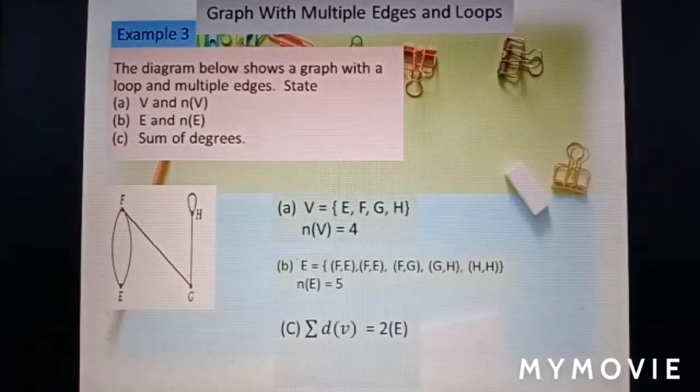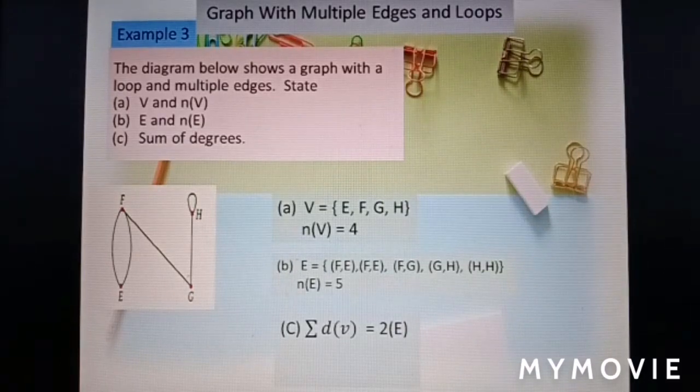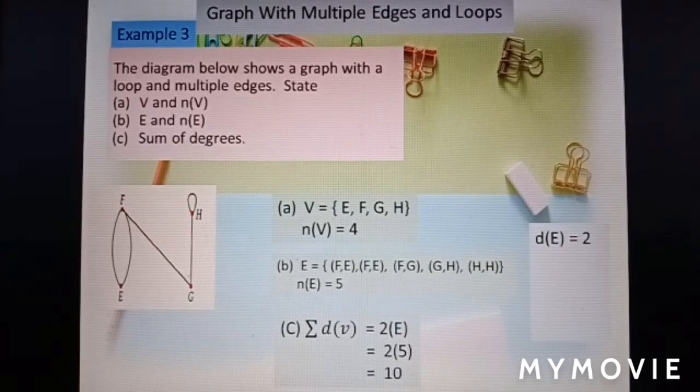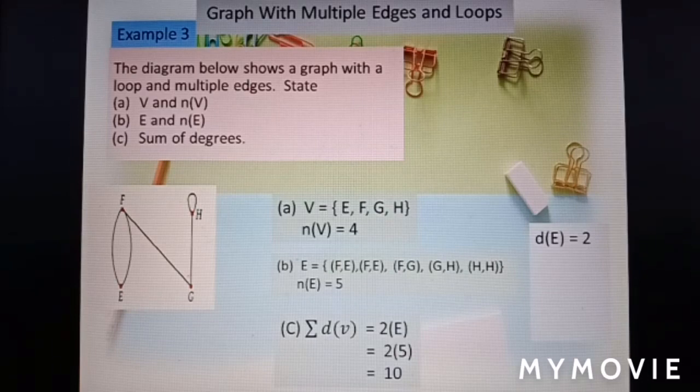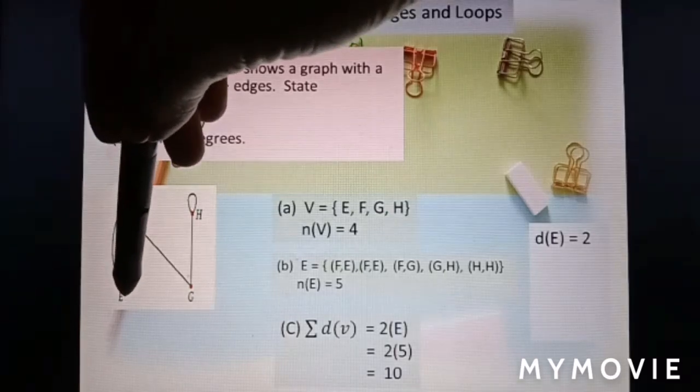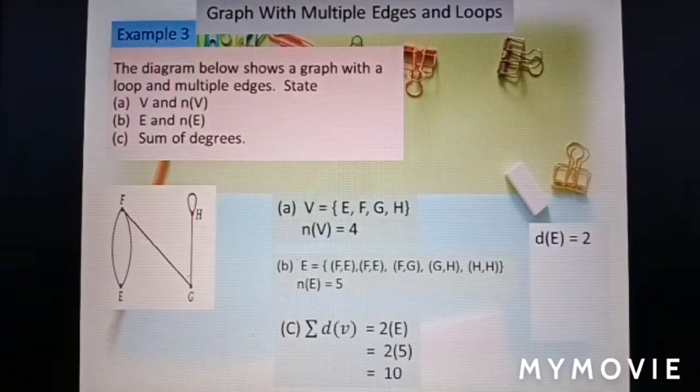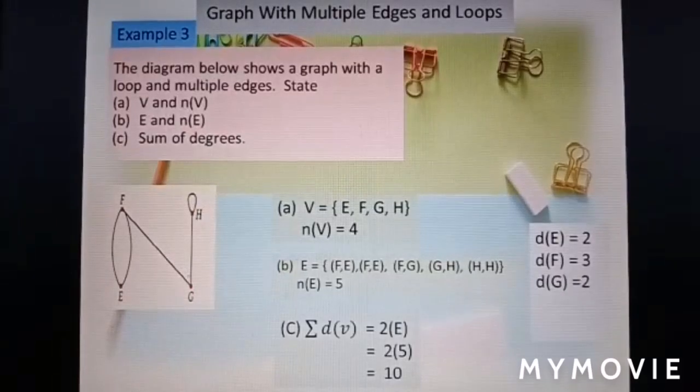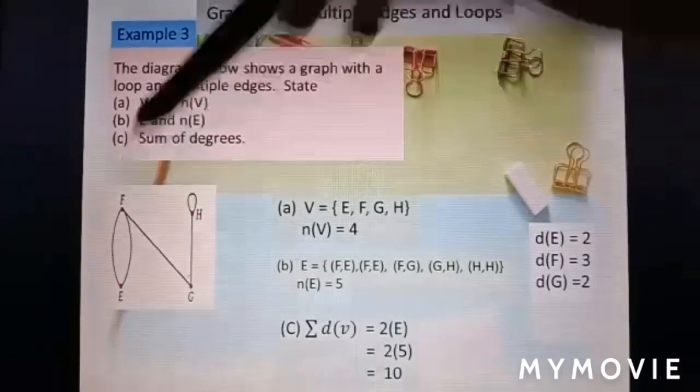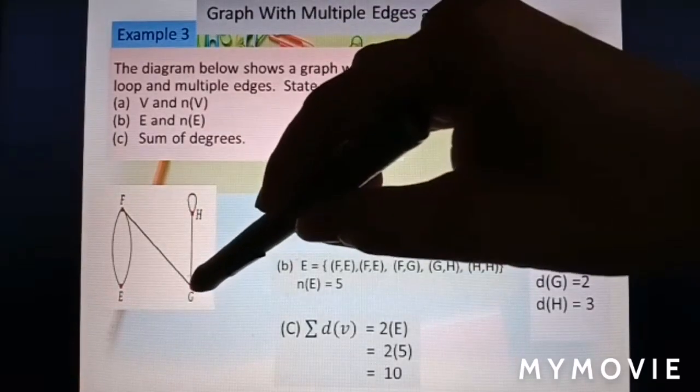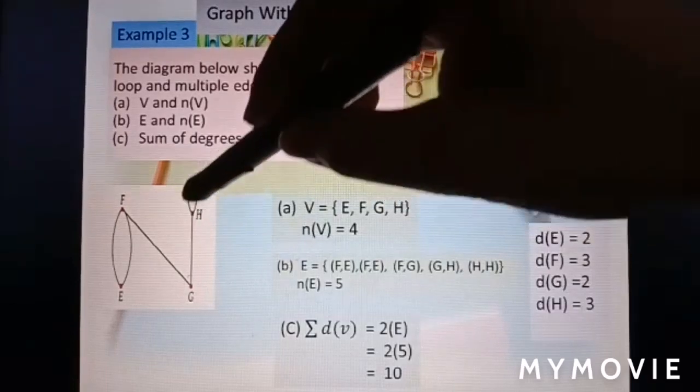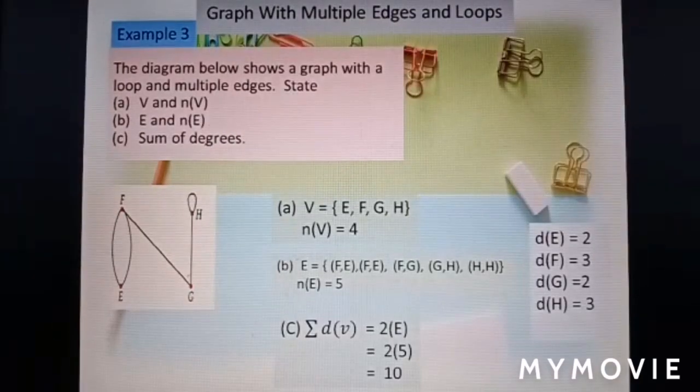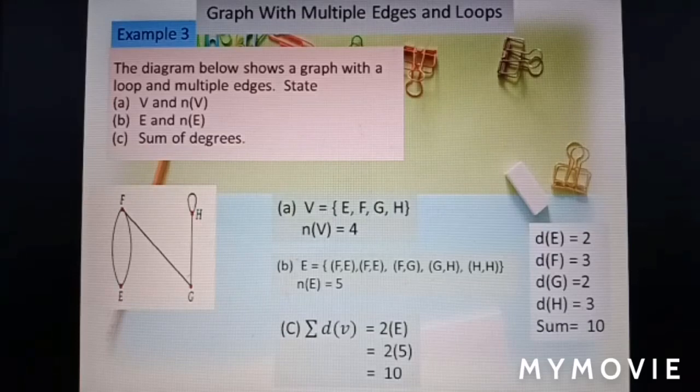Sum of degree is twice the number of edges. So 2 times 5 equal to 10. Now we look at degree for each vertex one by one. Degree E. This here. So 1, 2. Degree F. Here. 1, 2, 3. Degree G. 1, 2. Degree H. 1, 2, 3. So why here we have 2? Because one is clockwise. Another one is anticlockwise. So the sum of degree equal to 10.